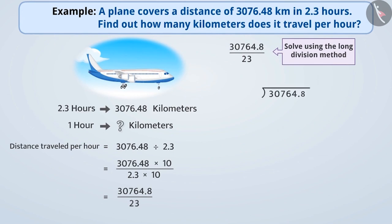Here, 30764.8 is the dividend and 23 is the divisor. To divide, we first check whether the whole part of the dividend is smaller or larger than the divisor. Here, 30764 is greater than 23. So, we can divide it.